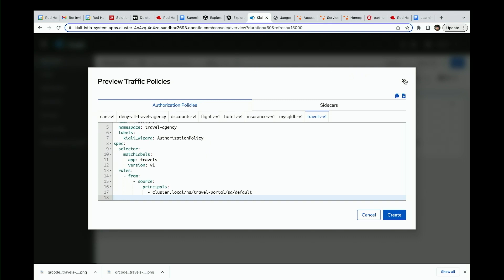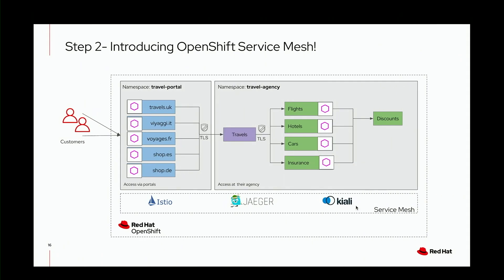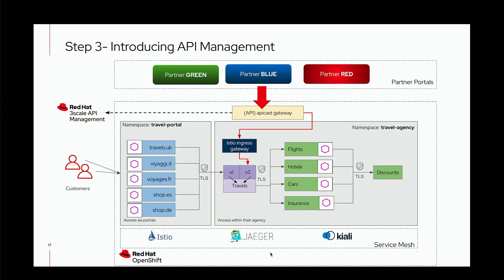So our travels company got the observability, traceability, and zero trust using Service Mesh. Now they became super popular and received a request from certain travel aggregators saying they'd like to bring in more deals — booking flights, hotels, and everything through their portals, bringing in revenue in exchange for a cut. This is a great business opportunity, but they need to handle certain things. First, they need a different version of the API for partners — they don't want external partners accessing the same API as their internal portals.